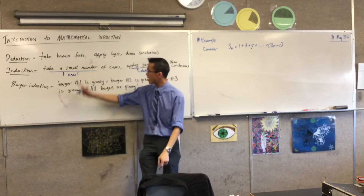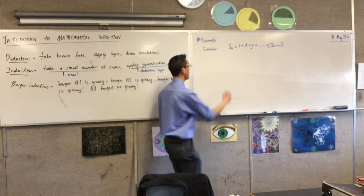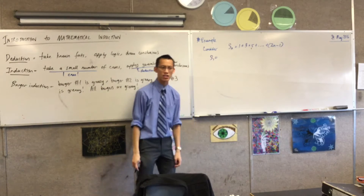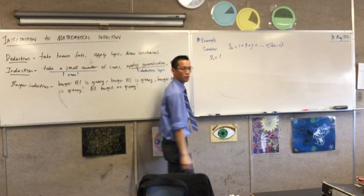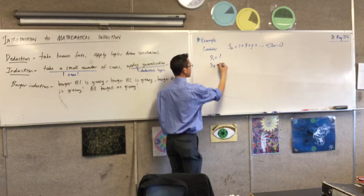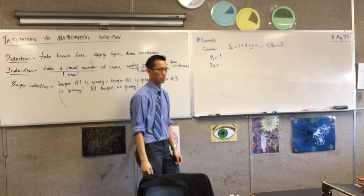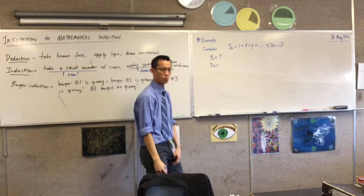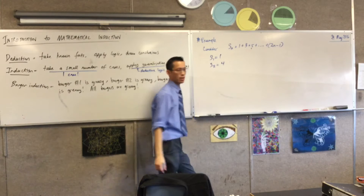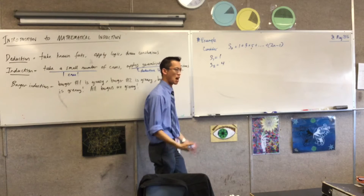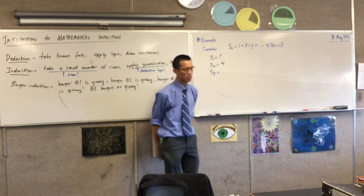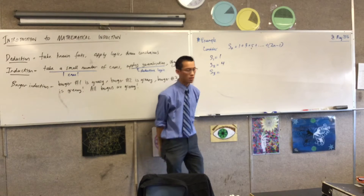I'm going to try and take a small number of cases. What's the first n term? It's just going to be one — that's the first odd number. What about the first two odd numbers? I'm going to have one plus three, which is four. Let's have a go at the next one: one plus three plus five.